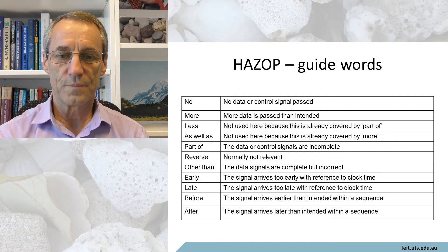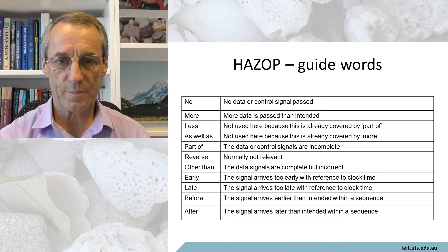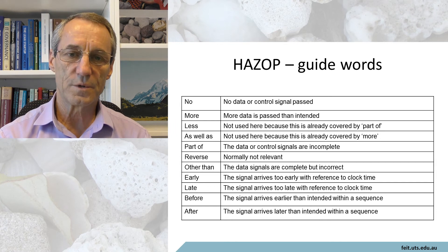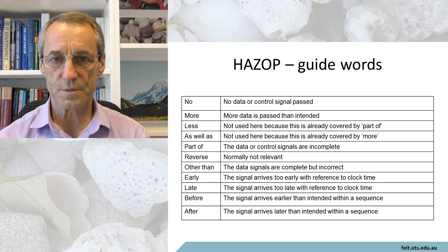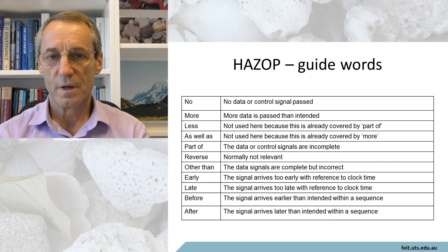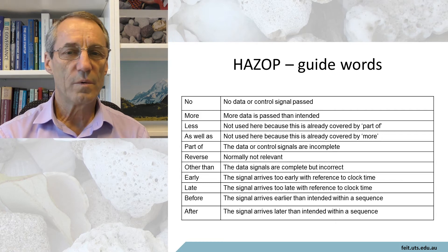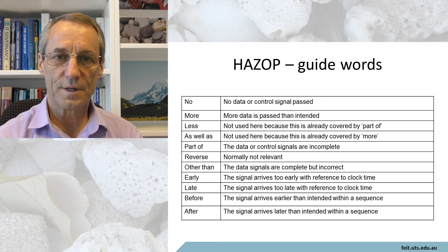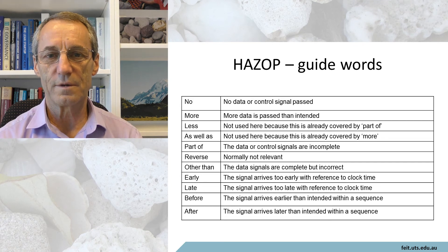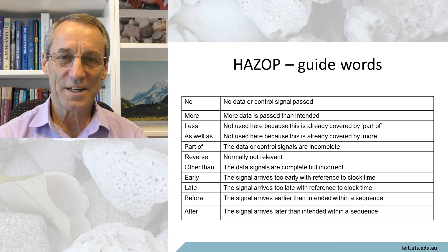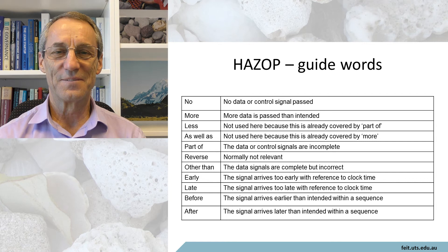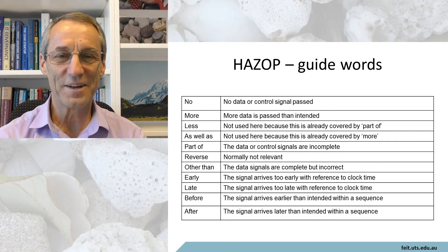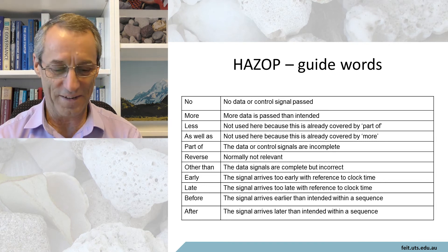Here are the guide words, bearing in mind we're thinking in terms of signals — in a chemical refinery, chemicals coming in or a signal to a valve. The first guide word is No: what happens if no data or control signal is passed? If you're looking at a control system, what happens if it doesn't get the signal — will that cause failure? More: what happens if more data is passed than intended? In telecommunications, you're expecting a record of a certain length and get one of double length — what do you do? Less: you're expecting a certain amount of data and don't get it all — how does the system handle it? As Well As: you get two or three signals when you want one — how will this be handled? Part Of: the data or control signals are incomplete.